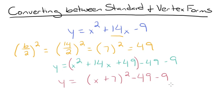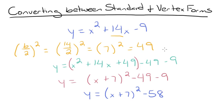So now all we have to do is combine our like terms, and we'll have y equals x plus 7 squared minus 58. Note that we went through this completing the square process fairly quickly — if you want more help on this, see one of our other videos where we go more in depth on how to do this process.